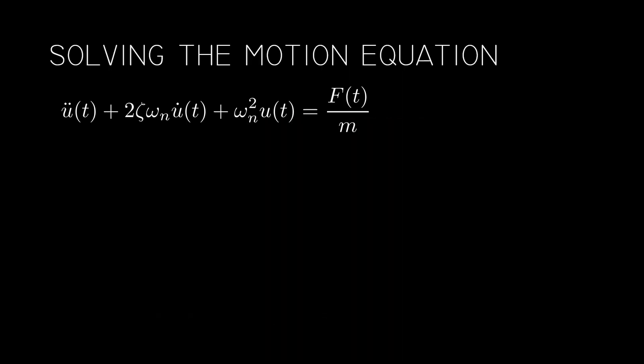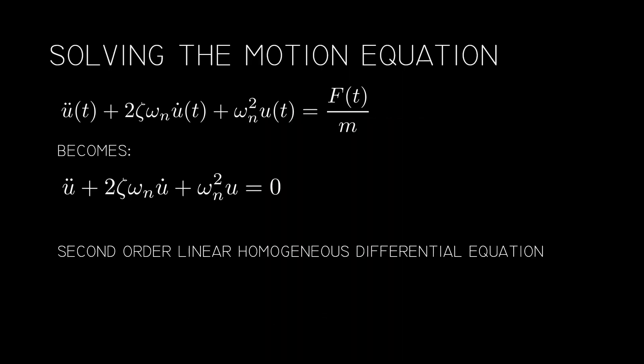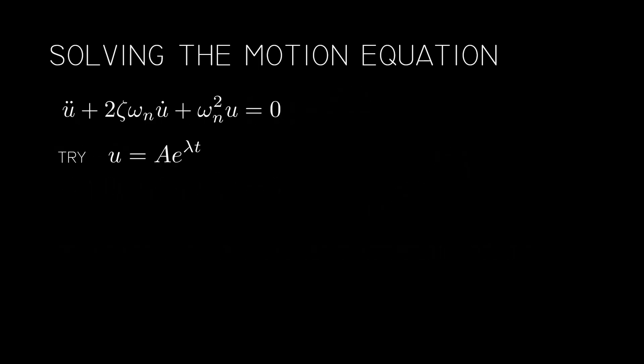Here's our original equation, which now simplifies to this second order linear homogeneous differential equation. I remove the t's just to make it easier to read. Now a solution to this equation is u = Ae^(λt). Substituting that and solving for lambda gives these two solutions. Don't believe me? You are welcome to try it for yourself, but I'm just going to move on.